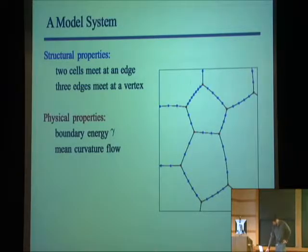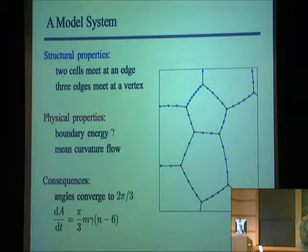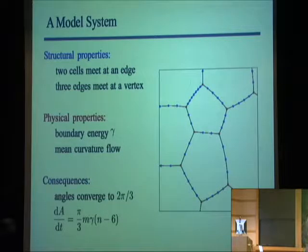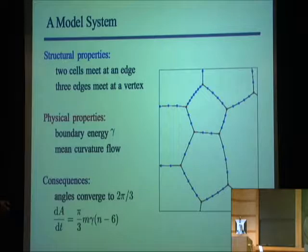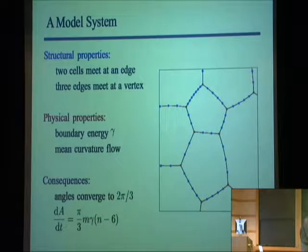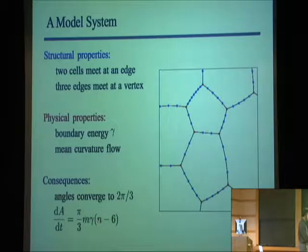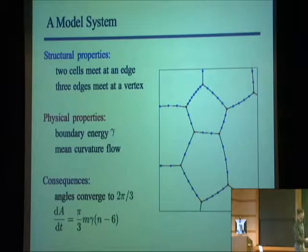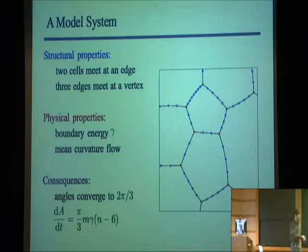There are various consequences of this. One is that the angles around the vertices all converge to 2π/3. You can see that by noting that the boundary energy gamma has equal units to a line tension, and requiring that the forces on a vertex balance — that the net force be zero. As a result of mean curvature flow, the rate of change of the area of one of these cells is directly proportional to N minus 6, where N is the number of sides of that cell. In particular, a six-sided grain does not change area. A five-sided grain will shrink. A four-sided grain will shrink twice as fast as a five-sided one. Seven- and eight-sided ones will grow.